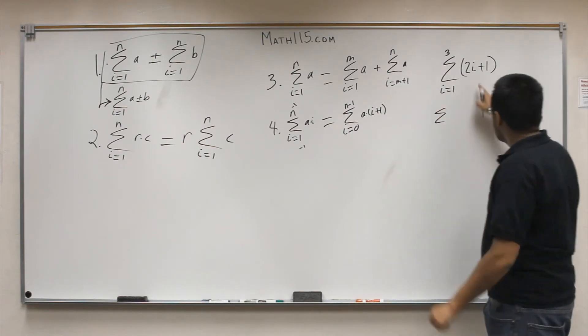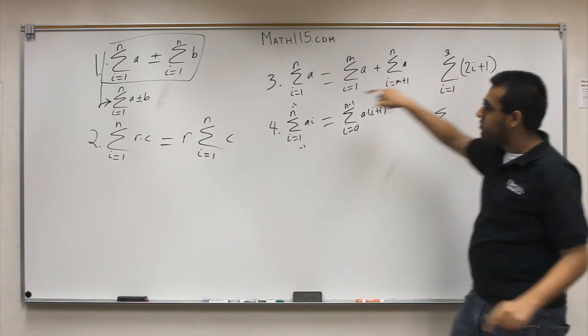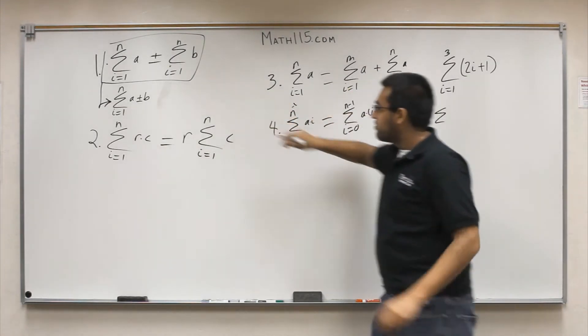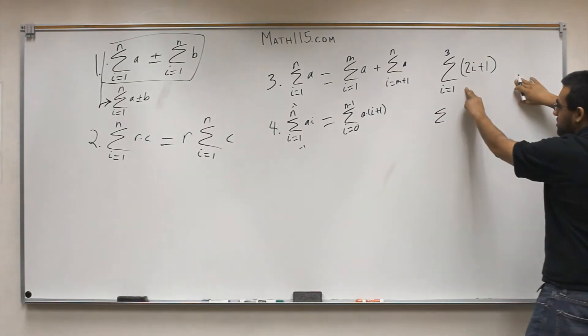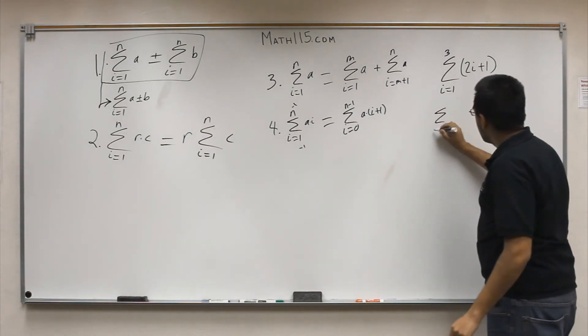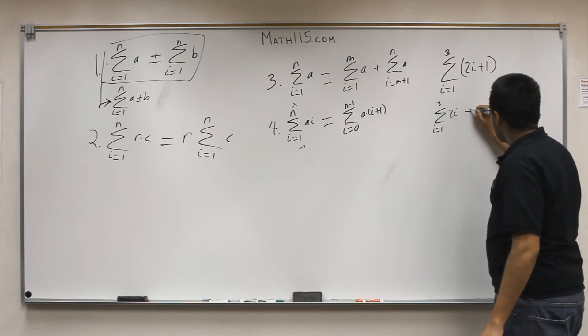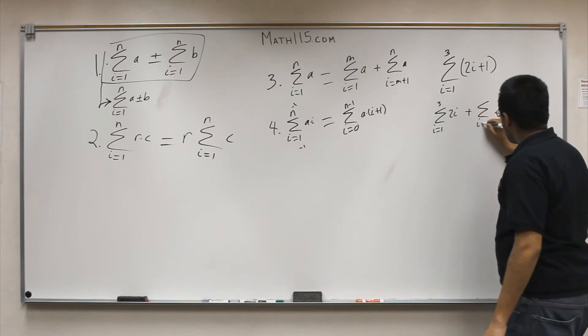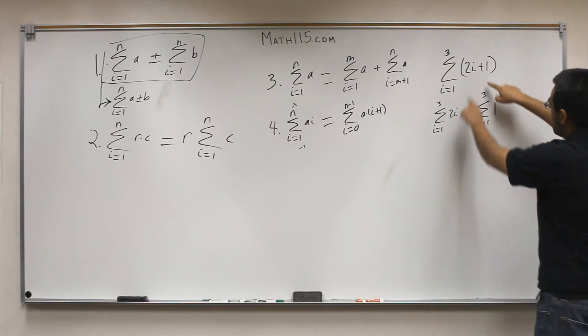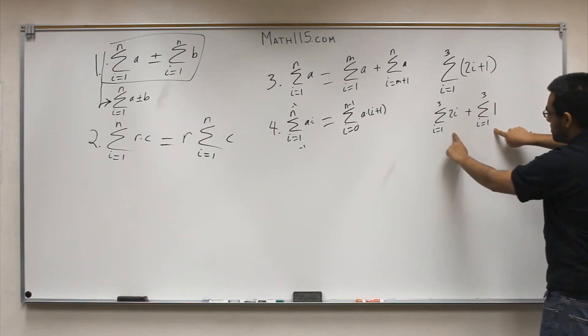We break this up. Remember, we're using rule number 1 right here. We're able to break it up into two parts. We have the same index, i equals 1 to 3, but this goes 2i plus another summation, i equals 1 to 3, with just a 1 right there. Now what we did was we broke this up into two separate summations.